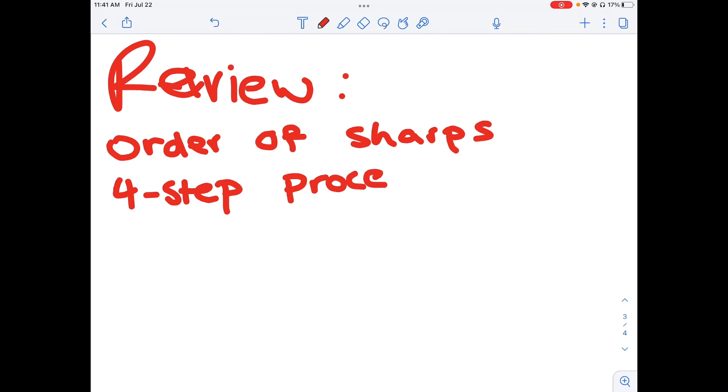To identify which major key we're in given certain sharps. Now, as you keep practicing some examples of this, you'll soon realize a little trick to getting the major key quicker than before. But the best way to do it is the four-step process, and that's all it is for this video.